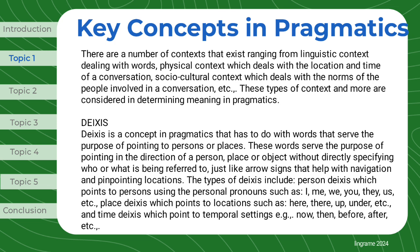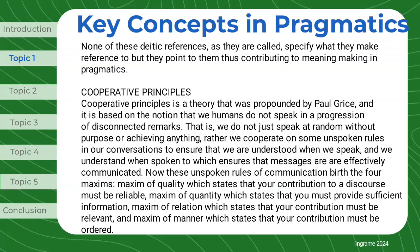Place deixis points to locations such as here, there, up, under, etc. And time deixis points to temporal settings, for example: now, then, before, after, etc. None of these deictic references, as they are called, specify what they make reference to, but they point to them, thus contributing to meaning making in pragmatics.